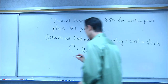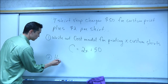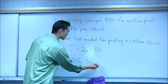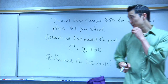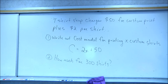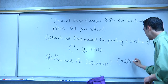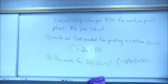Question two: how much for 300 shirts? My company wants to print 300 shirts as free advertising. Plug in 300: C = 2 times 300 plus 50, which is 600 plus 50, and you get $650.